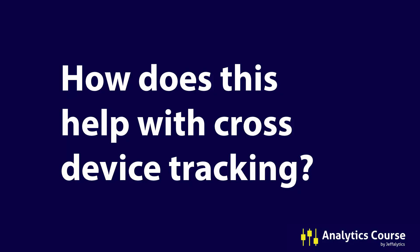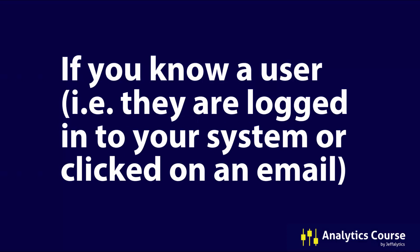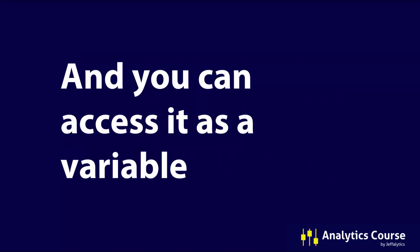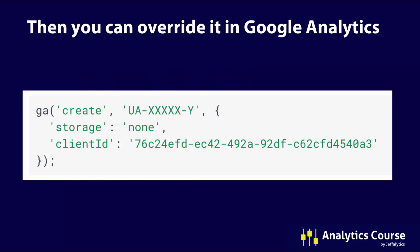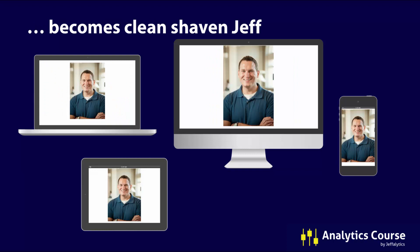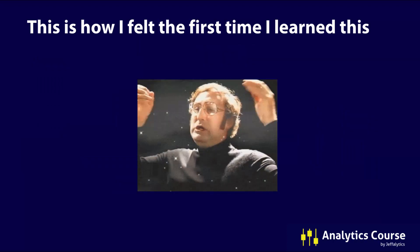How does this help you with cross-device tracking? Well, if you know a user — i.e., they're logged into your system or they clicked on an email — then you can pass along the client ID for that user when they come back to your website. You can access it as a variable and then override the cookie client ID in Google Analytics whenever somebody comes to your site. And when you do this, mustache Jeff becomes clean-shaven Jeff, because we've matched it up through the client ID, pulled in either through our email marketing system or our backend database.